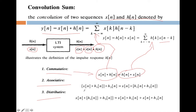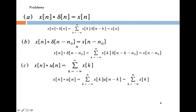The associative property says the convolution of x of n with h of n, and then with another sequence h of n, is equal to the convolution of x of n with the convolution of those two sequences. The distributive property states that x of n convolution of h1 of n plus h2 of n is equal to x of n convolution h1 of n, plus x of n convolution h2 of n. These properties are mainly used to simplify problems.